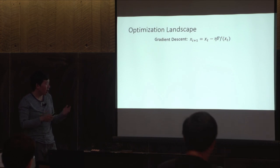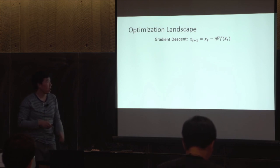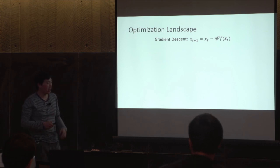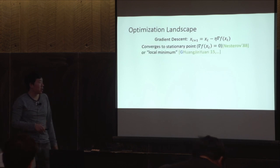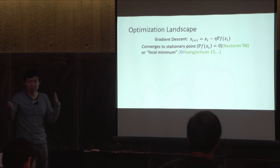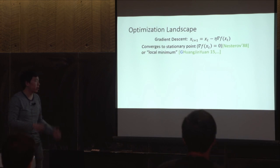Why do we care about optimization landscape? Nowadays people really use very simple optimization algorithms — as simple as gradient descent, which is nothing but following the negative direction of the gradient. It's surprising that even such a simple algorithm works on many problems. There is some understanding: we know gradient descent converges to a stationary point, and more recently we've shown that gradient descent also converges to an approximate local minimum.